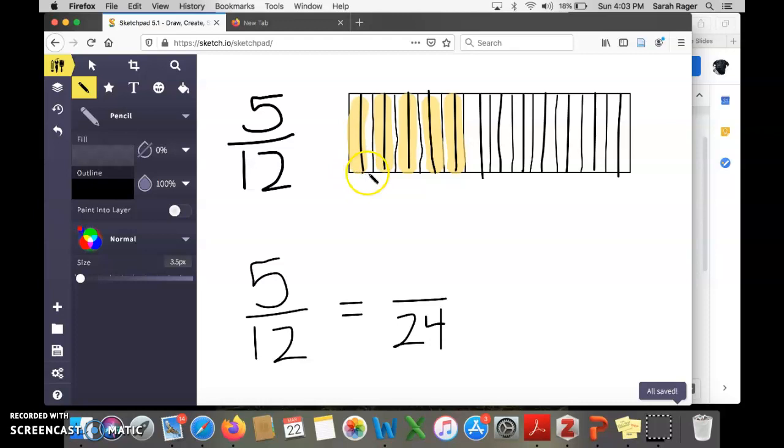All right, let me see if I have 24 units in all. Yep, I do. And 10 are filled in. That means 5 12ths is the equivalent to 10 24th.